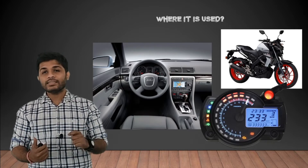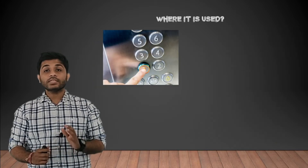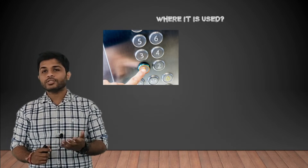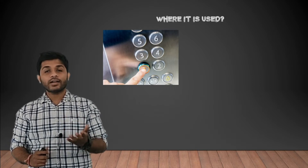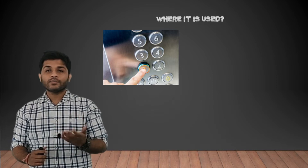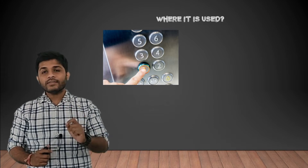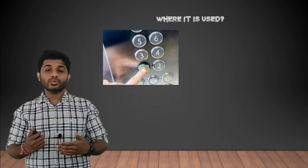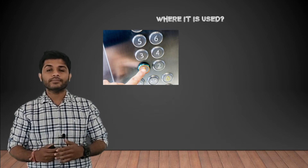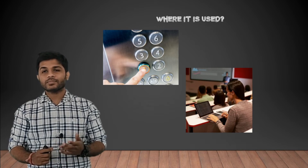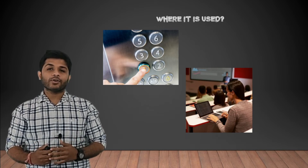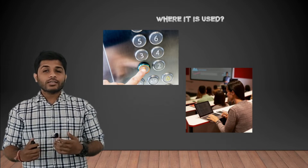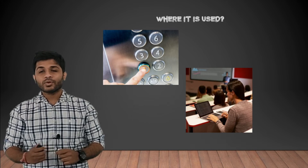Nowadays you can even control your car using a smartphone, which means your car contains a microprocessor. Now suppose you've reached college and need to go to the fifth floor using a lift. When you press the button, the lift arrives at your floor and takes you where you want to go — it means the lift contains a microprocessor because it reads inputs from the switch and performs tasks based on that. And of course, your laptop also contains a microprocessor.